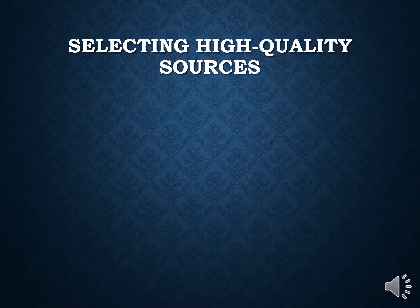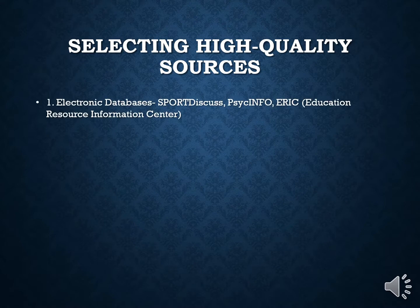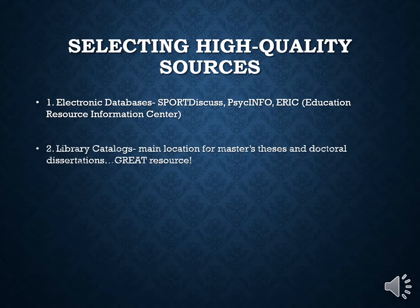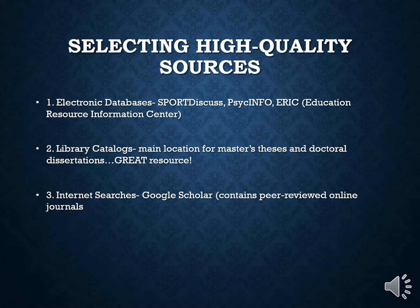We also want to look at the selection of high-quality sources. First, you look at electronic databases — some examples include Sport Discus, Psych Info, and ERIC, which is the Education Resource Information Center. You look at library catalogs, which are now electronic, and are the main location for master's theses and doctoral dissertations — a very great resource. You can conduct internet research through Google Scholar, which contains peer-reviewed online journals. You can also look at peer-reviewed journals either in print or online.